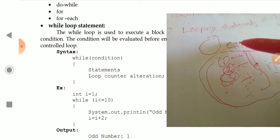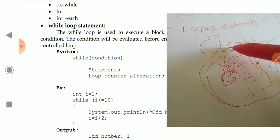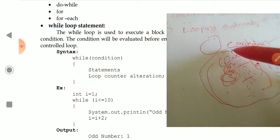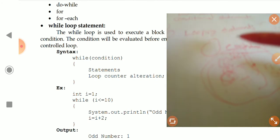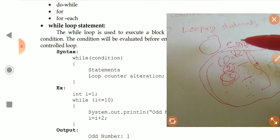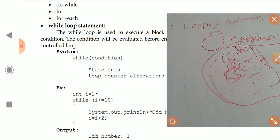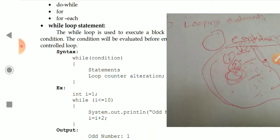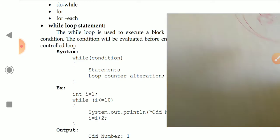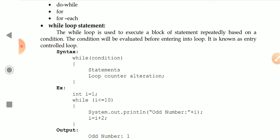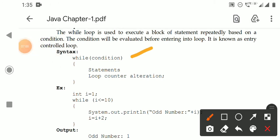Before executing the statements, you have to check the condition first. That means in a while loop, the condition is evaluated before entering into the loop. Because of this, the while loop is called an entry-controlled loop. The syntax is: write the 'while' keyword followed by the condition in parentheses — 'while (condition)'.